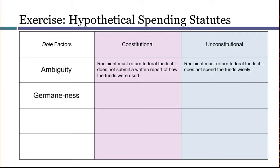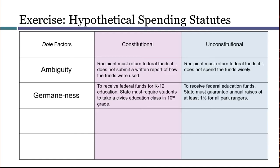Next, the condition has to have a sensible relationship to the purposes of the overall spending program. Please pause the video and invent some conditions on spending that are and are not germane to the underlying spending program. My own examples involve conditions on federal education spending. The requirement that the state teach certain material in exchange for education money seems related to the overall purpose of the spending — it seems germane. However, a requirement that a state give raises to all its park rangers in exchange for education funding is not germane; there is no discernible connection to education, and this would be an unconstitutional condition on the spending.